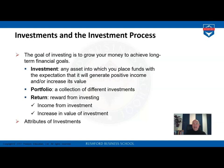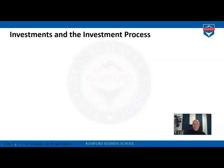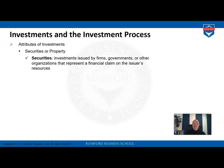Now let's talk about the different attributes of investments, starting with the difference between a security and a property. A security is an investment which is in general issued by a firm — equity securities in the form of a stock, or debt securities in the form of a bond. Governments can also issue securities, mainly fixed income securities in the form of bonds, as can NGOs or other organizations seeking financial claims.